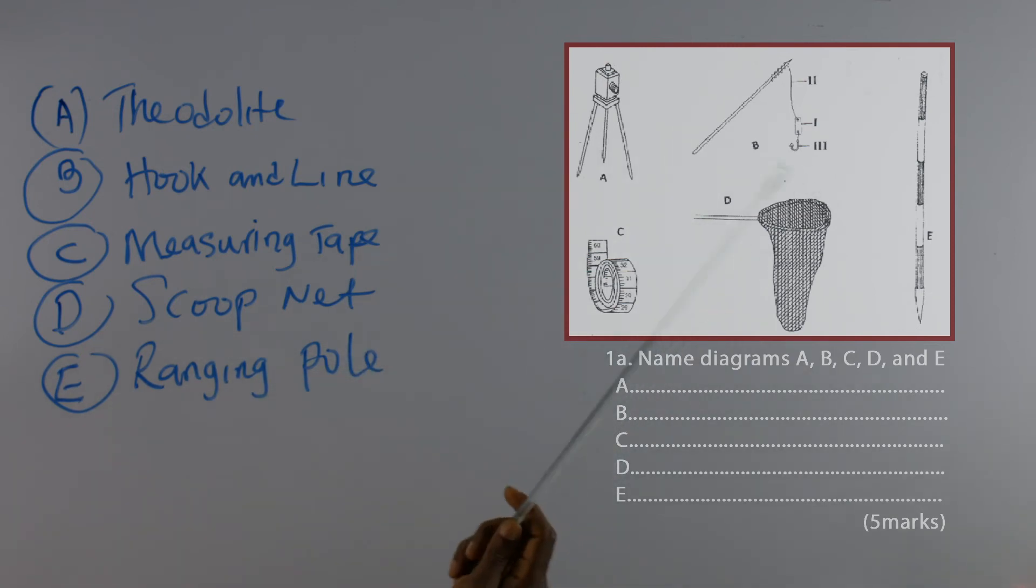So if you look at the diagrams again, we will see that A is a theodolite, B is hook and line, question C is a measuring tape, question D is a scoop net, while E is a ranging pole. So when you are faced with a situation like this, what you need to do is to look at the diagrams very well before you answer the question. And having been able to do that, you identify these diagrams and write it out.